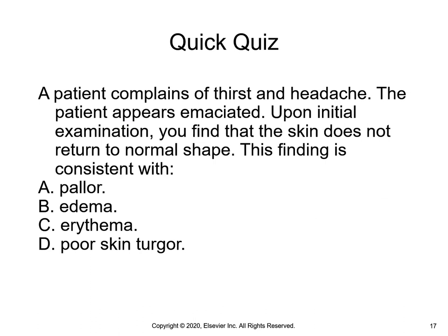A patient complains of thirst and headache. The patient appears emaciated. Upon initial examination, you find that the skin does not return to normal shape. This finding is consistent with pallor, edema, erythema, or poor skin turgor. The answer is D, poor skin turgor.